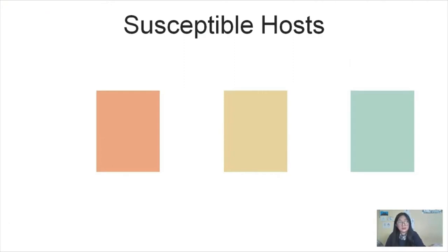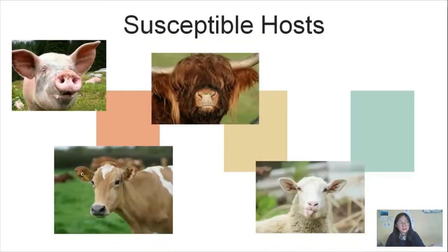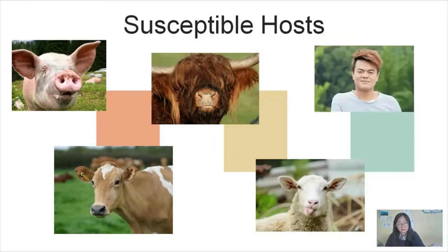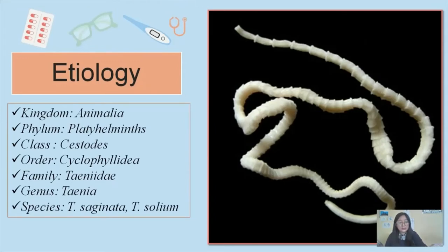Now the susceptible host: it can also affect humans. Other animals are also affected but these are the most important hosts. And now the etiology — Tenia saginata and Tenia solium and other species are also present. It falls under the kingdom Animalia, phylum Platyhelminthes which are the endoparasites, class Cestoda which means tapeworms, order Cyclophyllidea, family Taeniidae, genus Taenia.